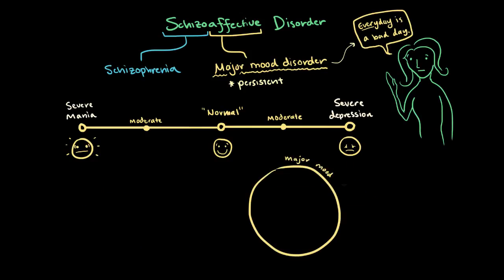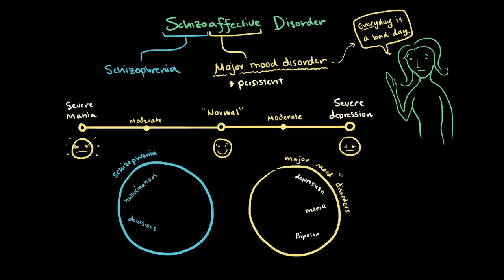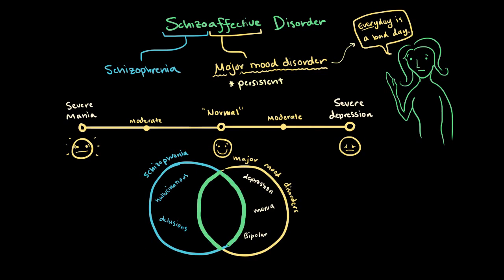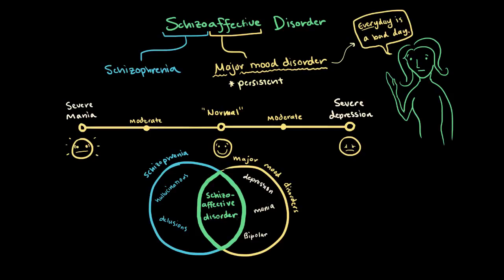Let's say you've got this circle for major mood disorders like depression, mania, or bipolar disorder, and this circle represents schizophrenia and symptoms of psychosis like hallucinations and delusions. If we combine these two sets, this middle chunk is what we call schizoaffective disorder, which has both a major mood disorder and symptoms of schizophrenia.